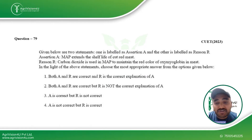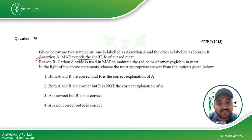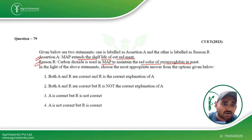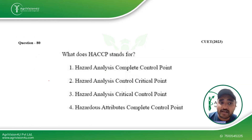The next is an assertion-reason based question. The assertion states that MAP (Modified Atmosphere Packaging) extends the shelf life of cut red meat — this is correct. The reason states that carbon dioxide is used in MAP to maintain the red color of oxymyoglobin in meat — this is not true, as it is due to oxidation. So the assertion is correct but the reason is wrong, making the third option the correct answer.